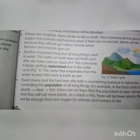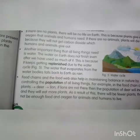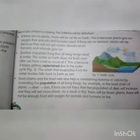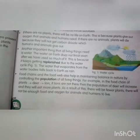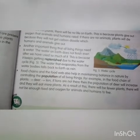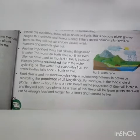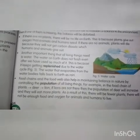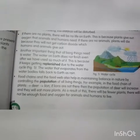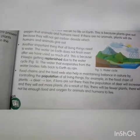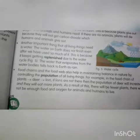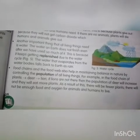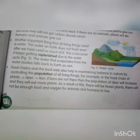The water that evaporates from water bodies rises into the atmosphere and falls back to earth as rain. This continuous process is the water cycle. Food chains and the food web also help in maintaining balance in nature by controlling the population of all living things.